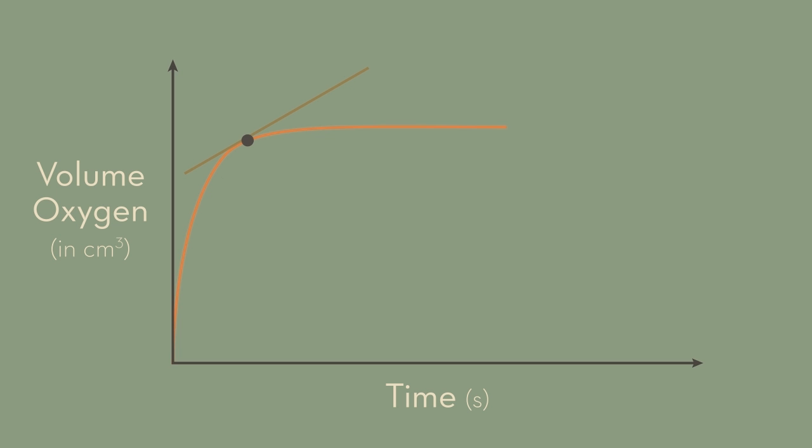A steeper gradient is representative of a faster rate of reaction, whereas a less steep gradient is representative of a slower rate of reaction.